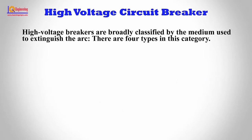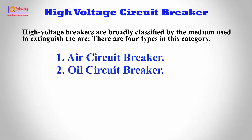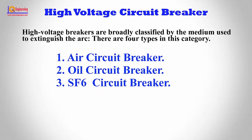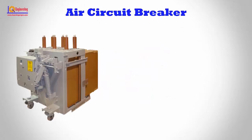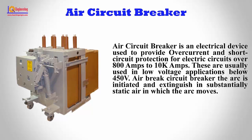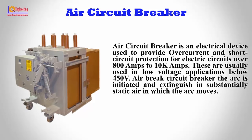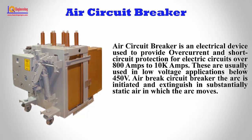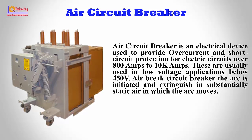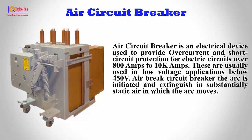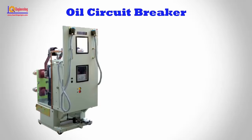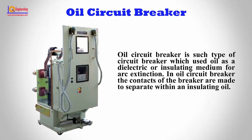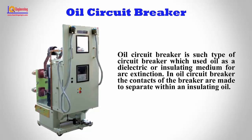High voltage breakers are broadly classified by the medium used to extinguish the arc. High voltage breakers are typically used to provide overcurrent and short circuit protection for electric circuits over 800 A to 10 kA. Air break circuit breakers use substantially static air in which the arc is initiated and extinguished as the arc moves. Oil Circuit Breakers use oil as a dielectric or insulating medium for arc extinction.